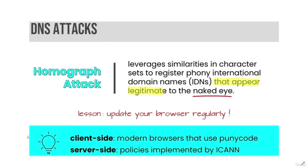Another type of DNS attack is a homograph attack, which leverages similarities in character sets to register phony international domain names (IDNs) that appear legitimate to the naked eye. Mitigations include updating your browser regularly, using modern browsers that support Punycode on the client side, and using policies implemented by ICANN on the server side.